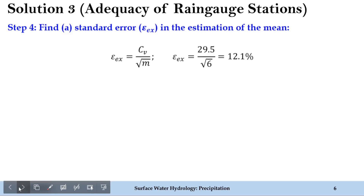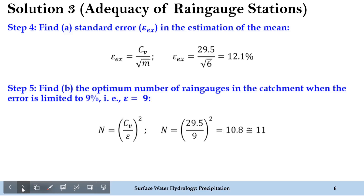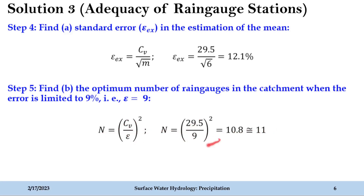In this way we have solved the first part of this problem. Now let's solve the second part. We need to find out the optimum number of rain gauges in the catchment where the error is limited to 10% as given in the problem. The equation is: N = (CV / ε)², where N is the optimal number of rain gauges and ε is the allowable error. Substituting: (29.5 / 9)² equals approximately 10.8, which rounds to 11.